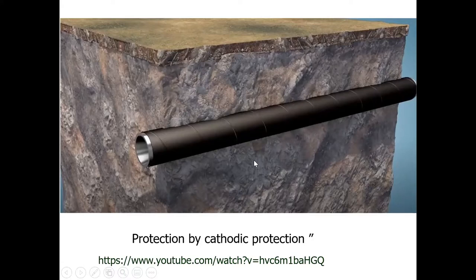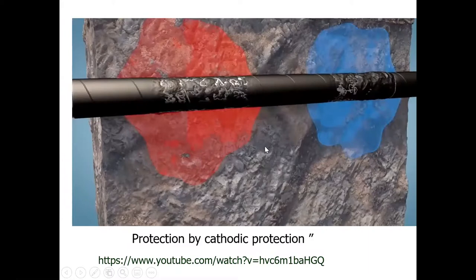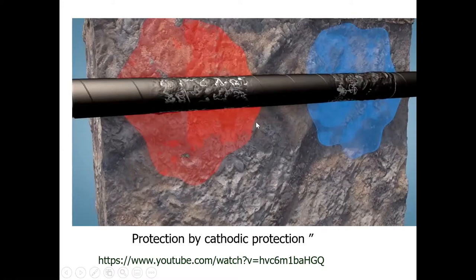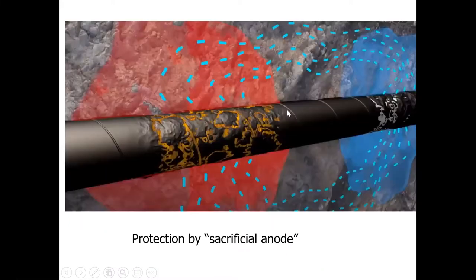Without cathodic protection, anodic areas shown in red and cathodic areas in blue develop on the pipe, causing the protective coating to bubble up and degrade. No matter how good the paint film, water always gets inside — especially around the joins. The ground is wet, contains dissolved salts, and provides a complete ionic conduction pathway, so the pipe degrades progressively.